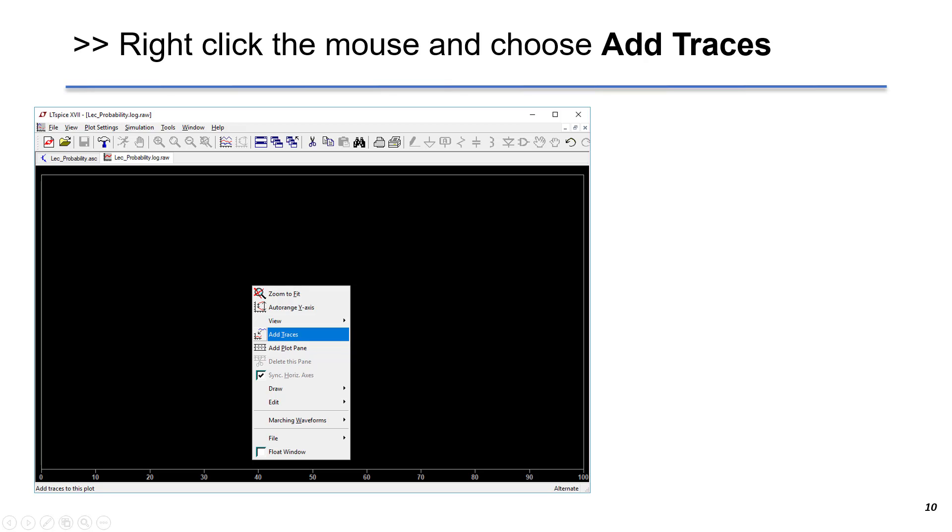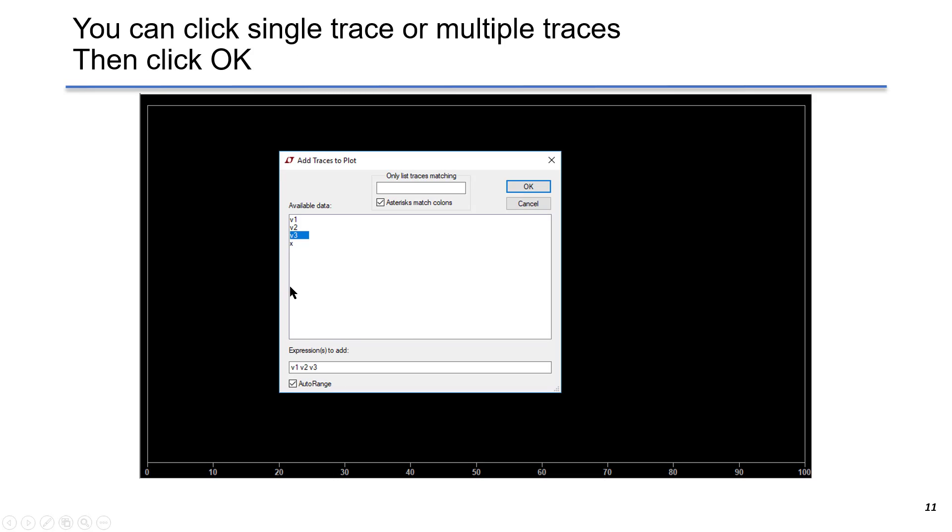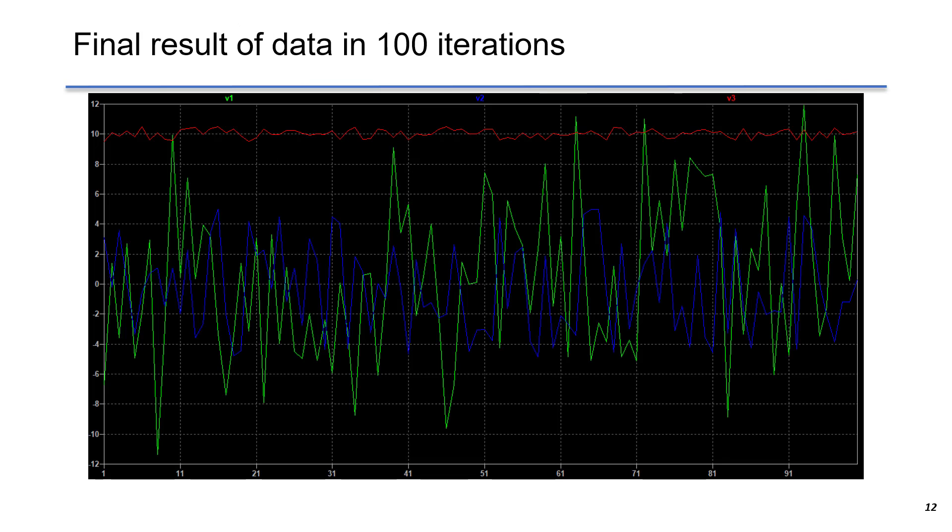Now, a window pops up for plotting. We right-click and choose Add Traces. Here are the available traces to plot. You can use left-click to choose the one you want to plot.